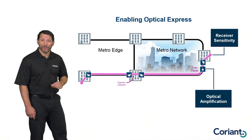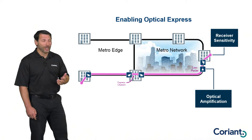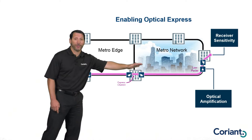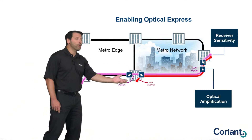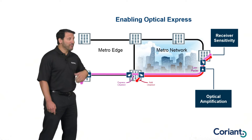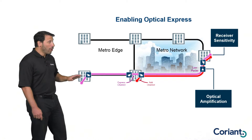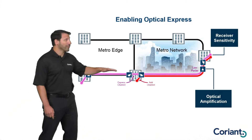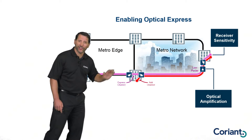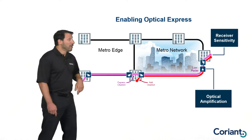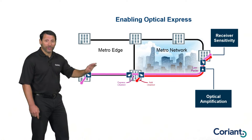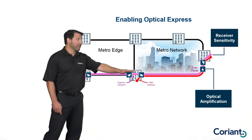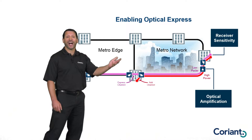There is a challenge when you use optical amplification in a network, and that challenge comes from intermediate locations where you have both optical express traffic passing through and locally added traffic. From a power perspective, the channels that are optically expressing through have a much longer distance to traverse, so they'll arrive at their destination at a much lower power level. Conversely, a locally added wavelength has a much shorter distance to travel, so it's going to arrive at its destination at a much higher power level.